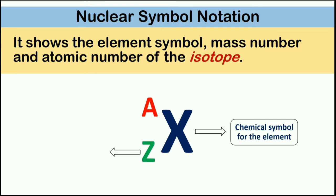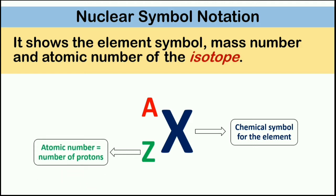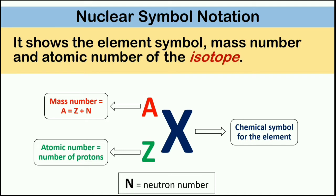Letter Z, written below the chemical symbol, is the atomic number, which is equal to the number of protons. Letter A, written in the upper part of the chemical symbol, stands for mass number, which is equal to Z plus N, where Z is the atomic number and N is the neutron number.